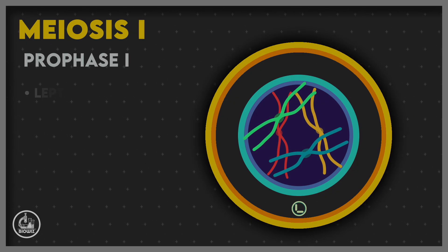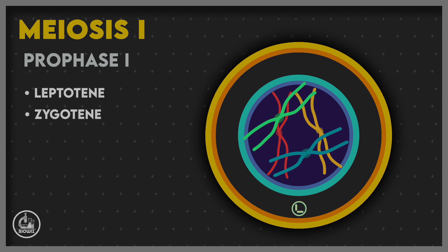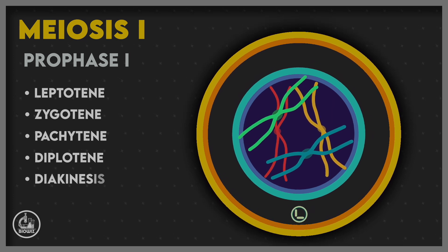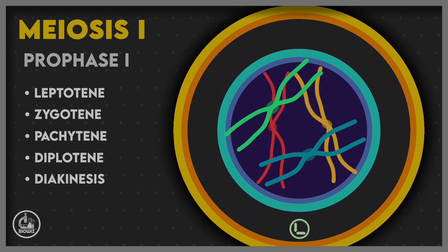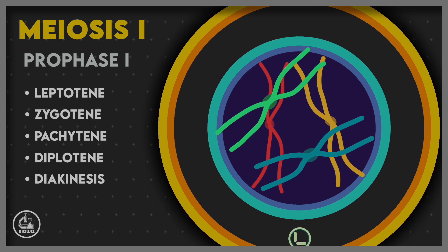Prophase I is the longest and most complex phase of meiosis. It is divided into five sub-stages: leptotene, zygotene, pachytene, diplotene, and diakinesis.